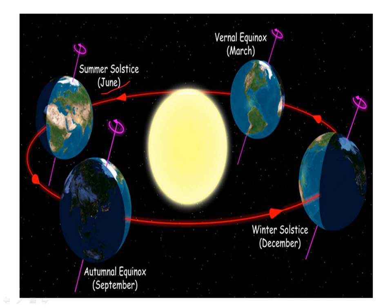Solstice happens due to the way the earth circles, or orbits, the sun. On June 21, the sun's rays fall directly on the Tropic of Cancer.